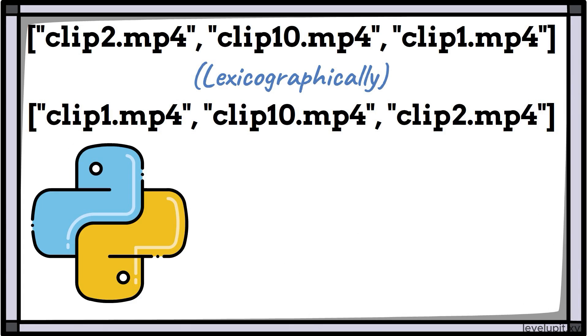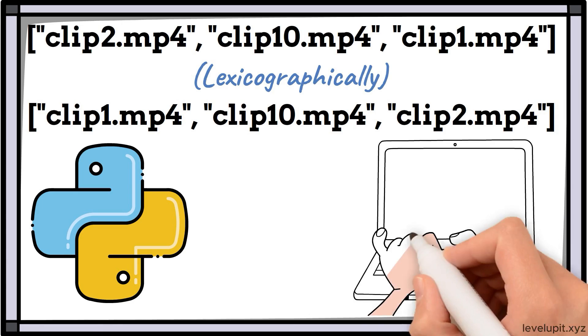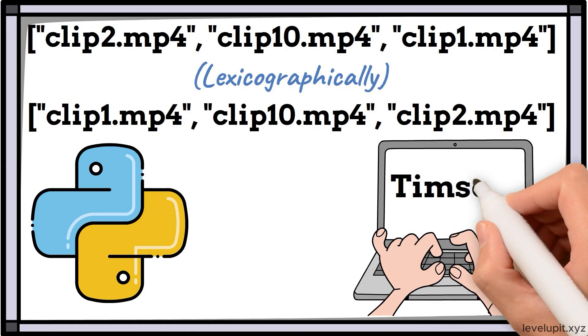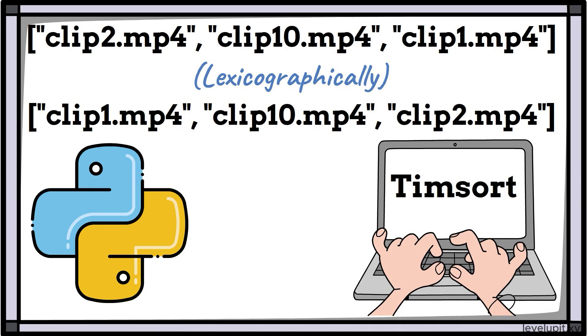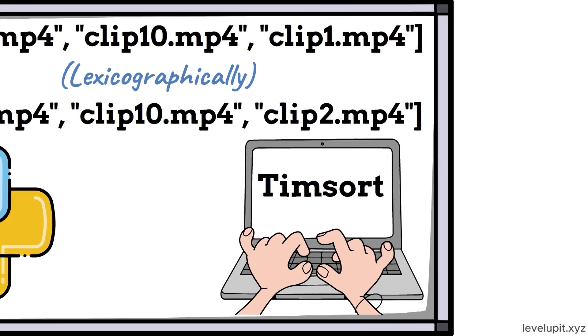The fix is to use the built-in sorted with a key that extracts the number. Sort by integer of the part between clip and mp4. With the right key, TimSort handles it quickly and gives clip1.mp4, clip2.mp4, clip10.mp4. This shows how powerful a good key is.